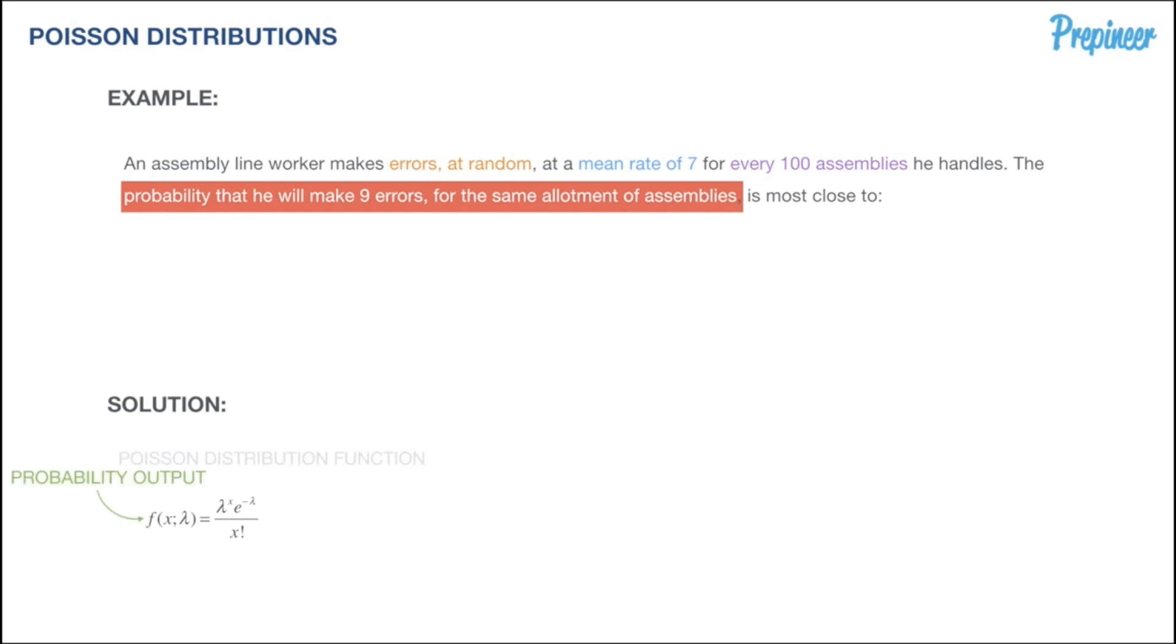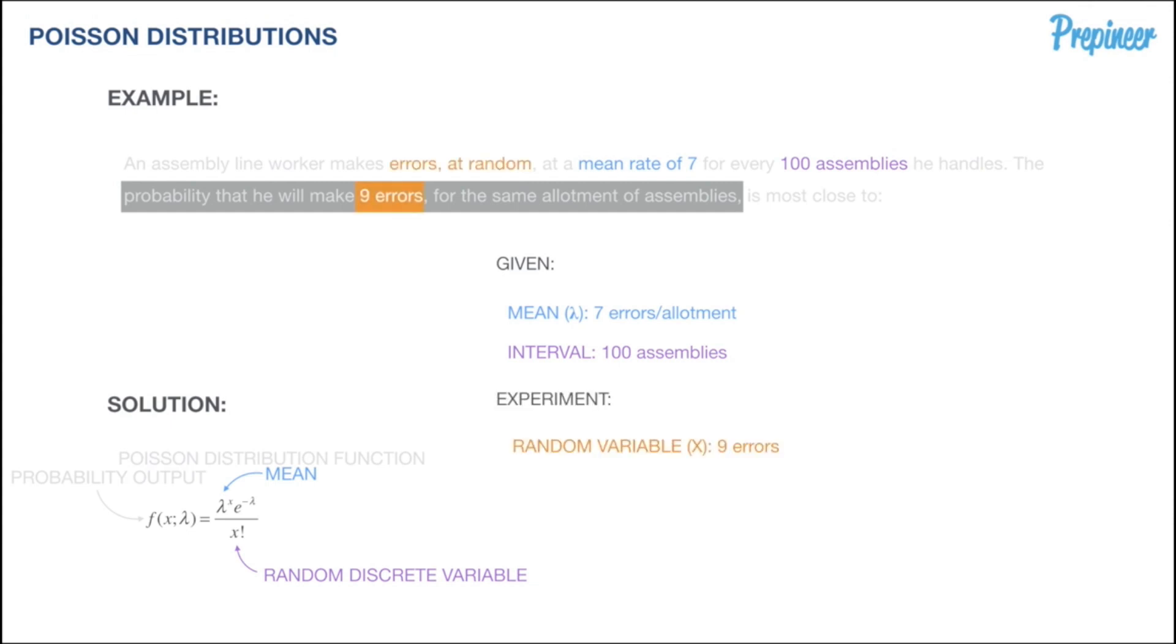Again, we'll have some probability output when we relate the mean and the random discrete variable. What are we given? The mean is 7 errors, 100 assemblies is our interval—this remains the same—and this time our random variable is 9 errors.